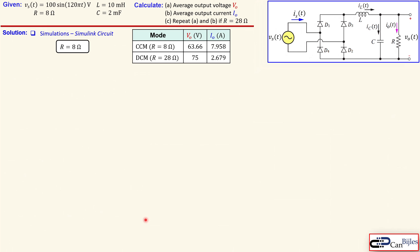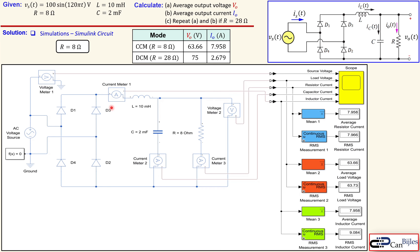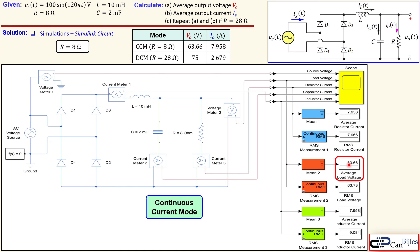Now let's look at the simulation results. This is the Simulink circuit for a resistor of 8 ohms. We have the voltage source, full wave rectification, the inductor and capacitor for the LC filter, and the 8-ohm load. The simulation shows the average load voltage is 63.66 volts and the average load current is 7.95 amps, exactly as calculated.